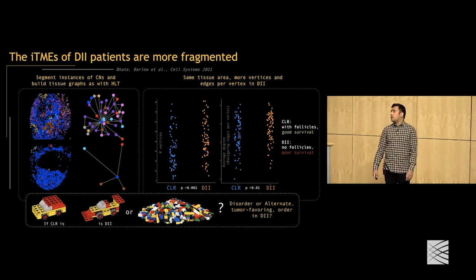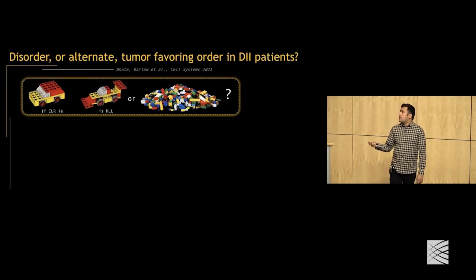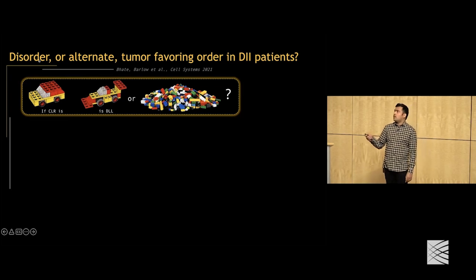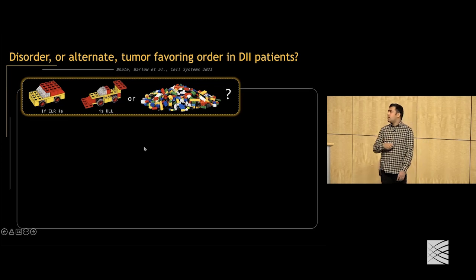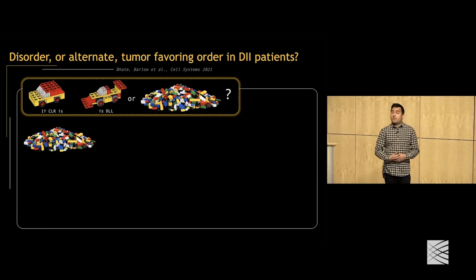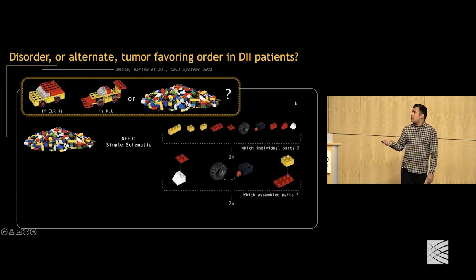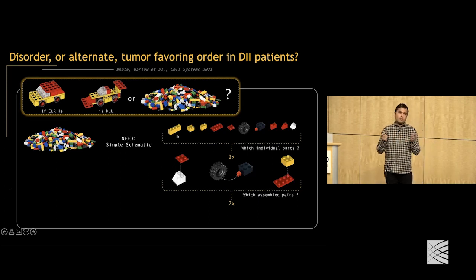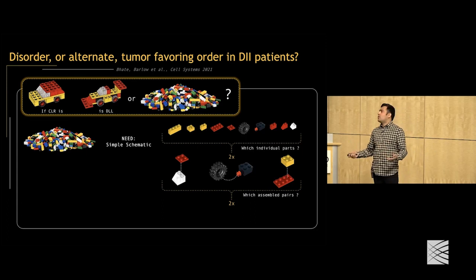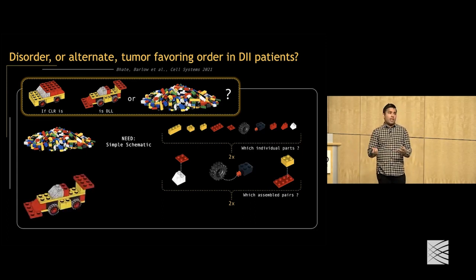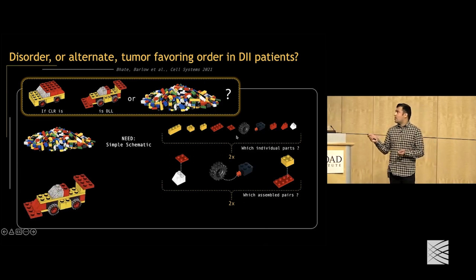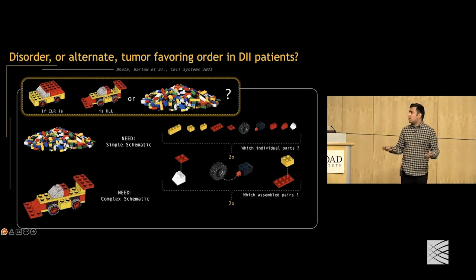If the DII patients' tissues were a jumbled mess, we'd only need a simple schematic to specify it — just which individual parts you need and which pairwise assembly pairs to put together. On the other hand, building a more complicated structure requires more detailed instructions about precisely how things fit together. So the question becomes: do constraints on simpler motifs explain the emergence of more complex motifs in the tissue? Our goal is to determine whether complex motifs arise more frequently than expected by entropy after constraining the amounts of simpler motifs.